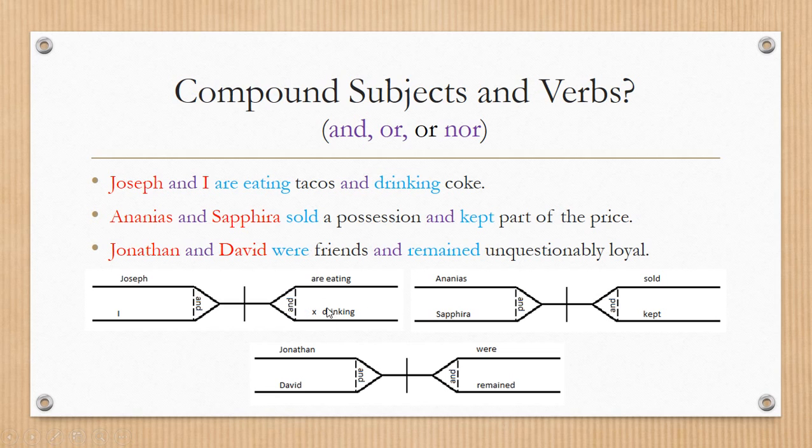We have Joseph and I are eating and drinking Coke. Since we don't say Joseph and I are eating tacos and are drinking Coke, we place this X here because of the auxiliary that has been omitted for the second verb. Then Ananias and Sapphira swore and kept. We have two subjects, a man and a woman. Two verbs.